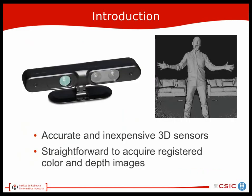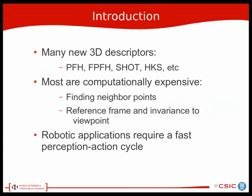Recently there has been the introduction of accurate and inexpensive 3D sensors like the Microsoft Kinect, and this gave us the possibility of also using depth information with our methods. The introduction of these new 3D cameras has led to the development of many new 3D descriptors such as the fast point feature histogram or SHOT.